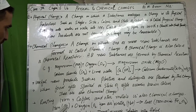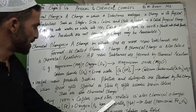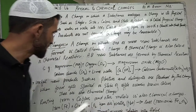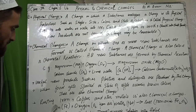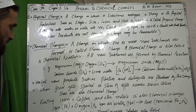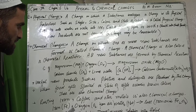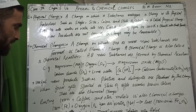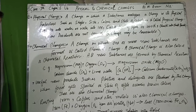Rusting of iron, copper, and other metals is also a chemical change. The oxidation of metals by oxygen or water produces new products — these are also chemical changes.